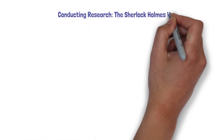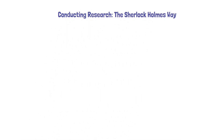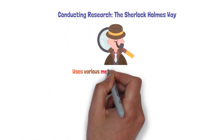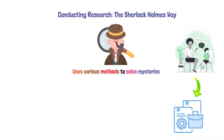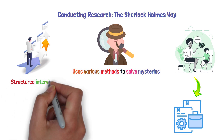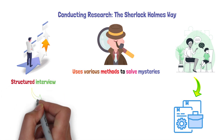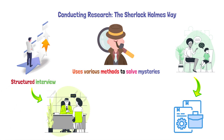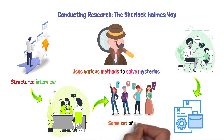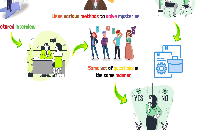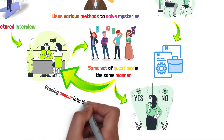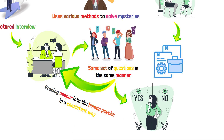Conducting research — the Sherlock Holmes way. Just like Sherlock Holmes uses various methods to solve mysteries, developmental psychologists have a toolkit of research methods. One popular approach is the structured interview, where researchers play the role of an interviewer, asking each participant the same set of questions in the same manner. It's not about yes-no or true-false questions, but rather about probing deeper into the human psyche in a consistent way.